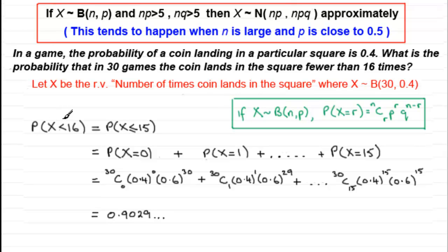And if I was to try and work this out by calculation from the formula that we've got here, then the probability X is less than 16 would be equal to probability X is less than or equal to 15. And that would be working out probability X is 0 plus 1 and all the way up to 15. And that's a lot of calculations as you can see here. But nonetheless, I've done it for you and it comes to 0.9029. So there's got to be a quicker way. And that's where this approximation comes in.